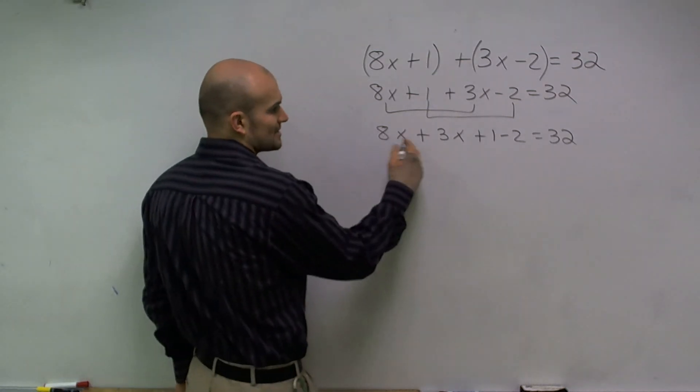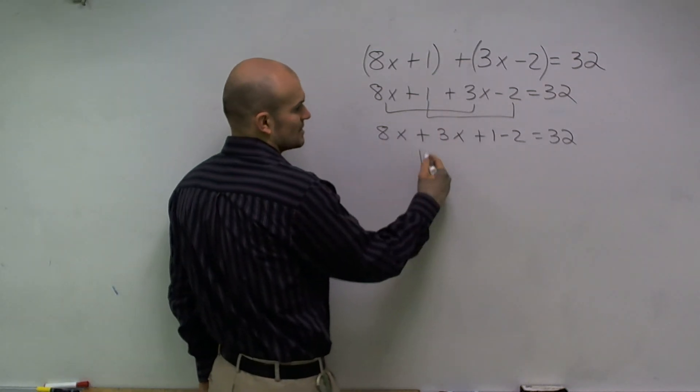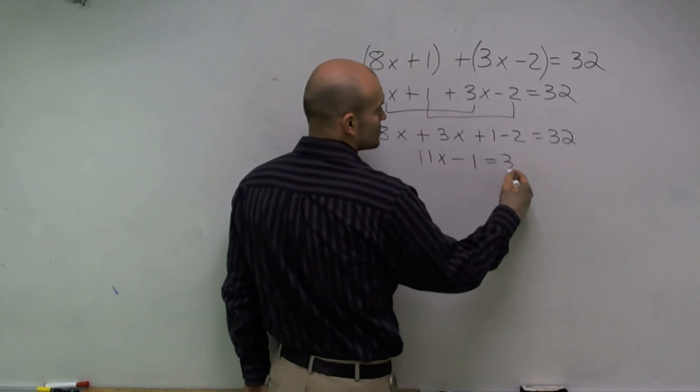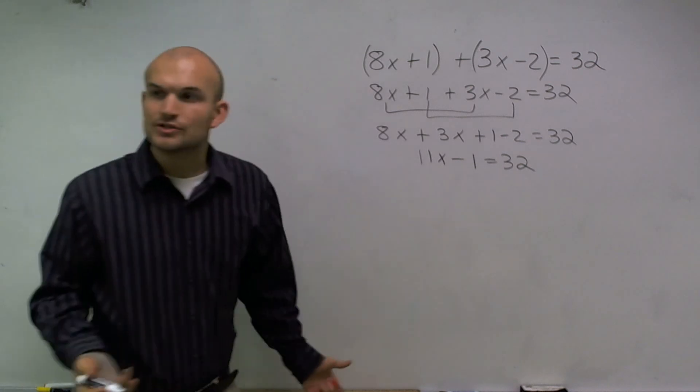And then when I solve, I can just combine 8x plus 3x is 11x. 1 minus 2 is negative 1 equals 32. Now I'm at a two-step equation.